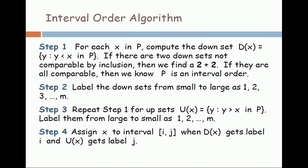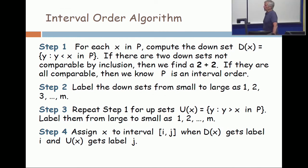But now we want to talk about the interval order algorithm. It consists of four steps, and there's a loop in the middle. So we start by computing for each element x the down set. That's in the spirit of the proof that we just did. And then you look at the down sets and see whether or not any two are incomparable, incomparable in the sense of set inclusion. If the answer is yes, then you're going to conclude that your given poset is not an interval order, because you will have found a 2 plus 2. Let's pause right there and take an application to make sure that you see what is involved.